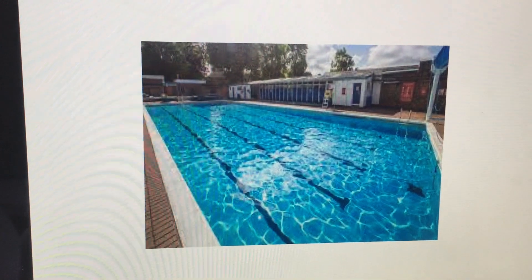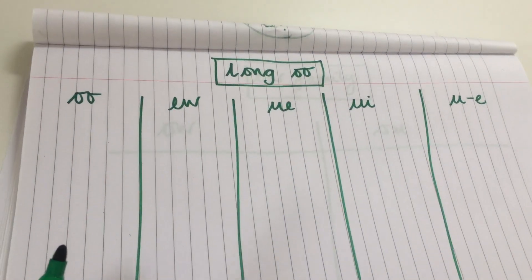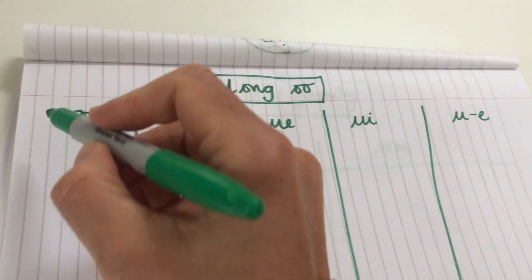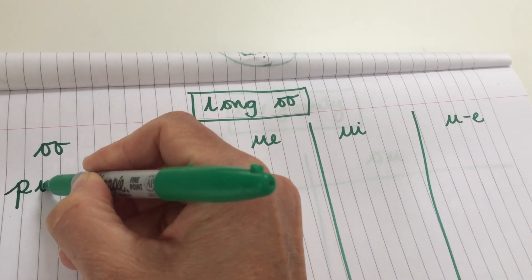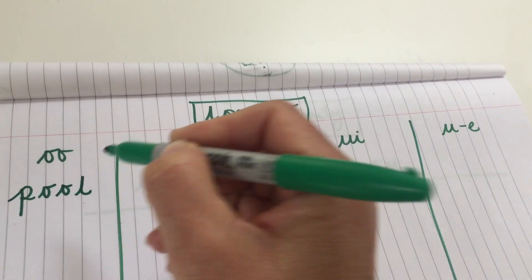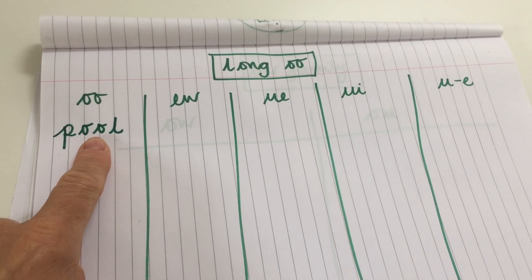So let's have a look. The first picture is oo as in pool. And that is using the double O digraph. So let's add the first one in. P, oo, l, pool, like a swimming pool. So that's going to go into our first column.